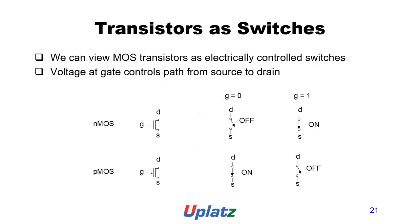Transistors as switches: we can view MOS transistors as electrically controlled switches. The voltage at the gate controls the path from source to drain. Here the symbol of NMOS and PMOS and how each is used as a switch are shown.